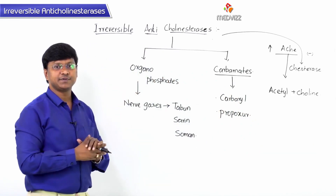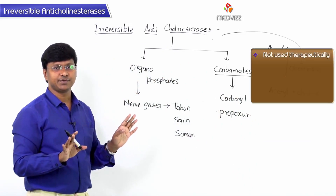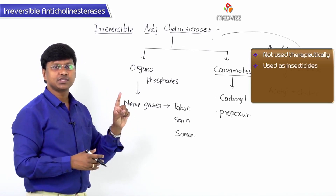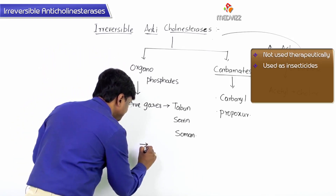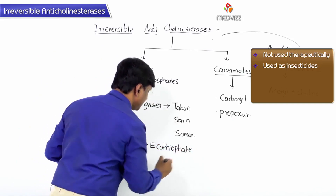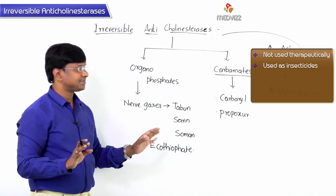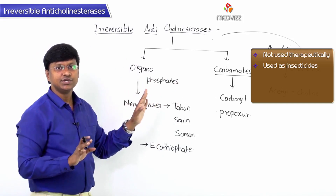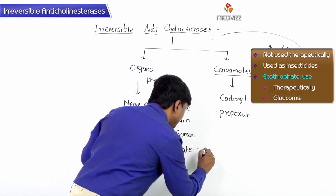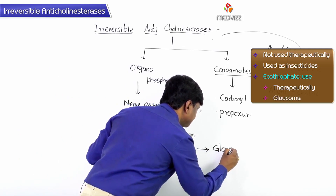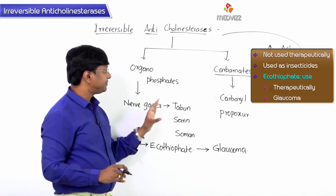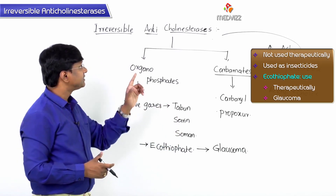Most of these drugs are not used therapeutically; most are used as insecticides. The only drug used therapeutically among the irreversible anticholinesterases is ecothiophate, which is used in the treatment of glaucoma.